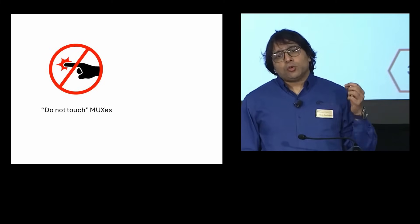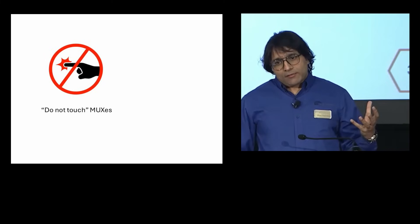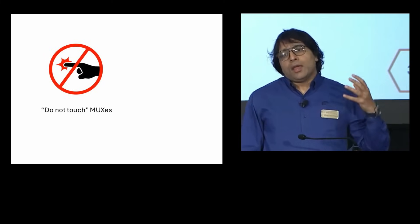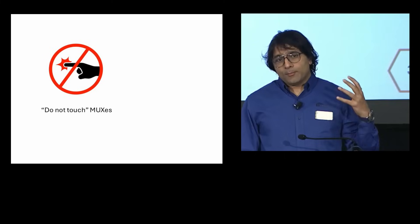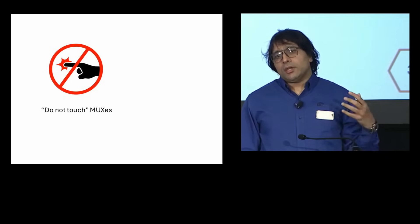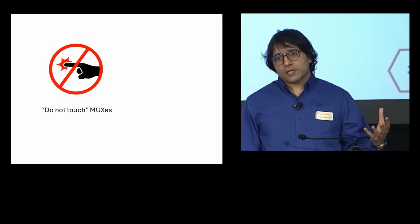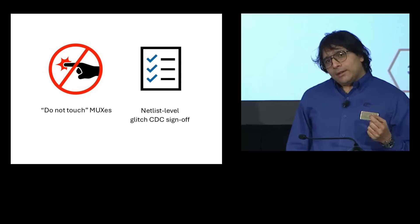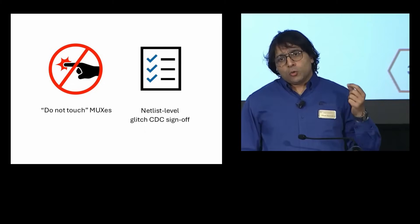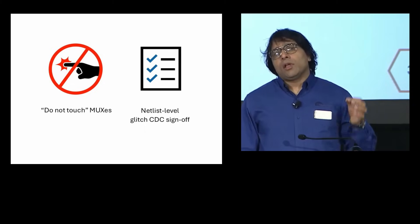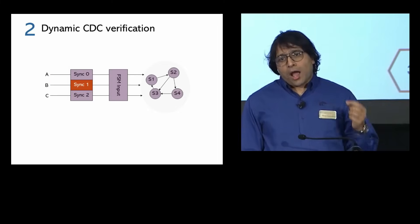There are two methods to avoid these kinds of silicon issues. First, at RTL level, do a CDC sign-off and identify the MUXs and mark them do not touch in your synthesis and optimization flows. Second method is do a netlist level CDC sign-off with the glitch rules turned on.